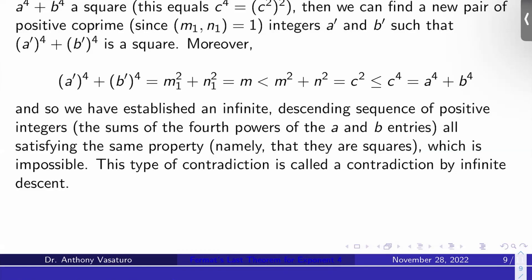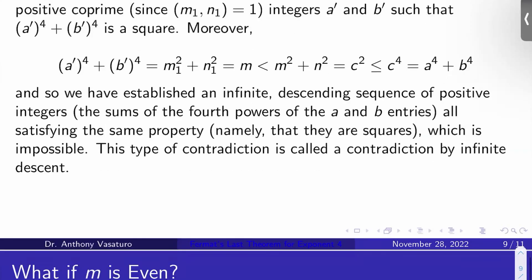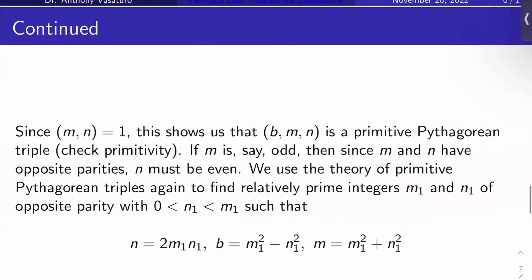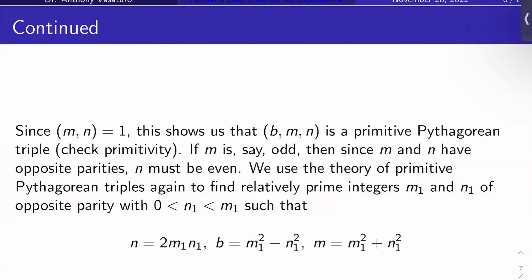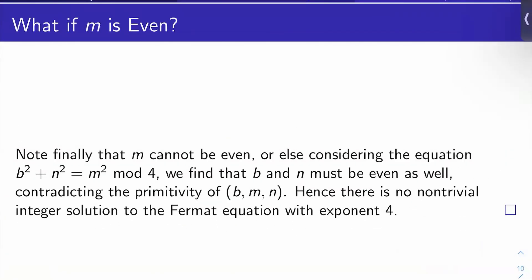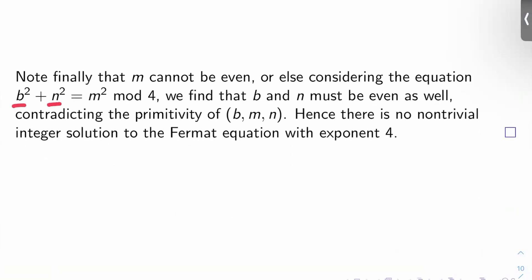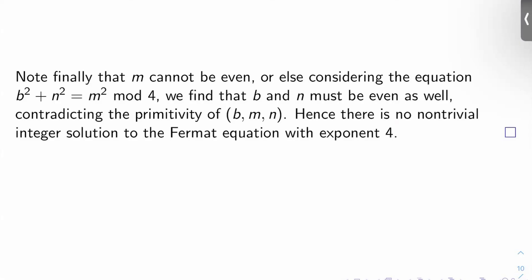So there was no non-trivial integer solution to the Fermat equation of exponent 4 to begin with. Now, we assumed m was odd throughout. What if m is even? Well, m can't actually be even: if it were, and you consider b² + n² = m² mod 4, you would find that b and n have to be even as well. But the triple bmn was a primitive Pythagorean triple, so b, m, and n can't all be even — that would contradict primitivity. So in no case is there a non-trivial integer solution to the Fermat equation with exponent 4. We have our contradiction and are done with the proof for exponent 4.